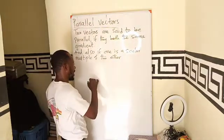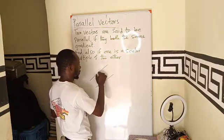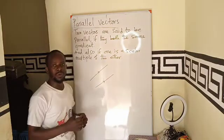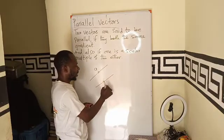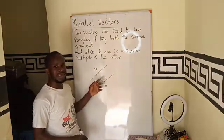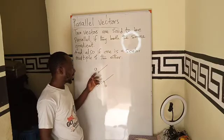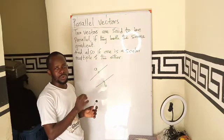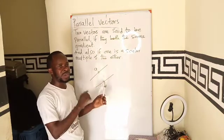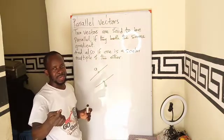Now, parallel vectors, as we can see, move in the same direction. So if I have this as vector A and vector B, if both have the same gradient and their direction is the same, it means that the scalar multiple, what is multiplying one vector to give the other, will be positive.